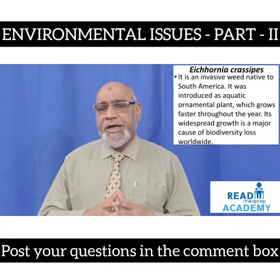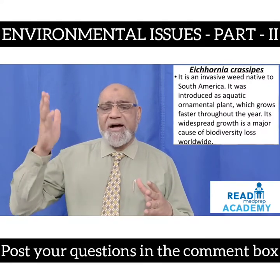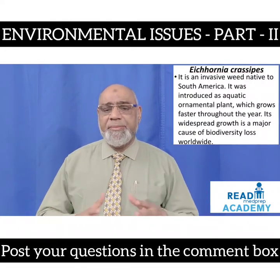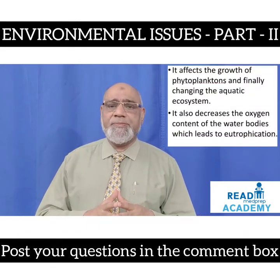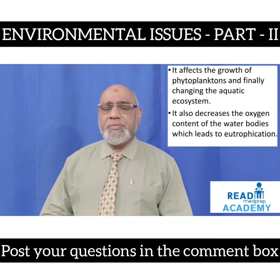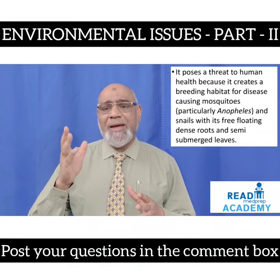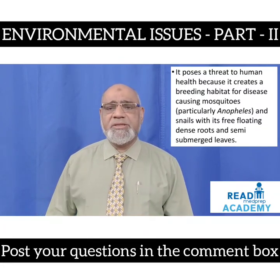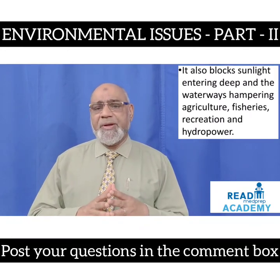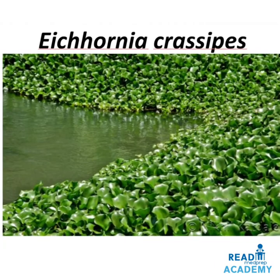Eichhornia crassipes is an invasive weed native to South America. It was introduced as an aquatic ornamental plant and grows faster throughout the year. Its widespread growth is a major cause of biodiversity loss worldwide. It affects the growth of phytoplankton, changing the aquatic ecosystem. It also decreases the oxygen content of water bodies, which leads to eutrophication. It poses a threat to human health because it creates a breeding habitat for disease-causing mosquitoes, particularly Anopheles, and snails, with its free-floating dense roots and semi-submerged leaves. It also blocks sunlight entering deep waterways, hampering agriculture, fisheries, recreation and hydropower. Here you can see how the lake is being covered with Eichhornia crassipes.